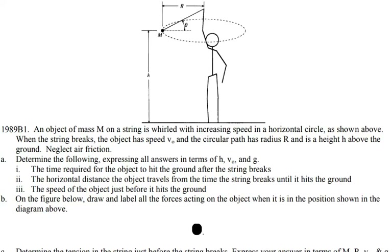This AP Physics 1 FRQ question is from 1989 — it used to be AP Physics B, but now these topics are covered in AP Physics 1. In this problem, an object of mass M on a string is rolled with increasing speed in a horizontal circle. When the string breaks, the object has speed v₀, the circular path has radius r, and is at height h above the ground. Neglect air friction. They ask you to determine the following, expressing all answers in terms of h, v₀, and g.